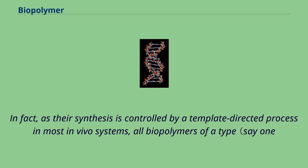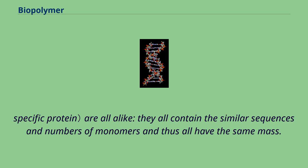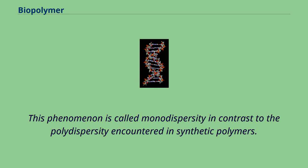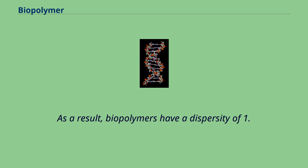As their synthesis is controlled by a template-directed process in most in vivo systems, all biopolymers of a type — say one specific protein — are all alike. They all contain the similar sequences and numbers of monomers, and thus all have the same mass. This phenomenon is called monodispersity, in contrast to the polydispersity encountered in synthetic polymers. As a result, biopolymers have a dispersity of 1.